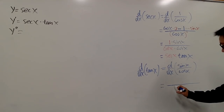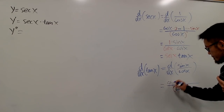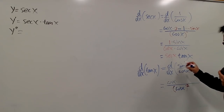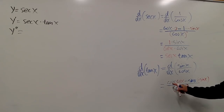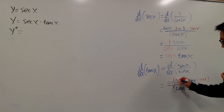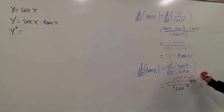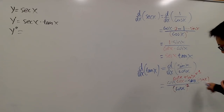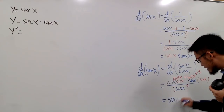We will square the denominator, putting it in parentheses: cosine x squared. On the top, we have the bottom function, which is cosine x, times the derivative of the top — the derivative of sine x is cosine x — and then we minus the top function, sine x, times the derivative of the bottom, which is negative sine x. Cosine x times cosine x is cosine squared x, and negative times negative is plus, so sine x times sine x is sine squared x. Cosine squared plus sine squared equals 1, so altogether we have 1 over cosine squared, which is secant squared x.